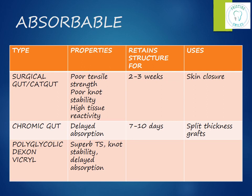Surgical gut is a natural absorbable suture — also called catgut because it is derived from cattle intestinal submucosa. It has poor tensile strength, poor in-vivo knot stability, and high tissue reactivity. It retains its structure well for two to three weeks and is used for skin closure.